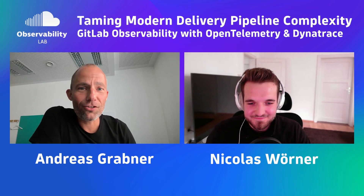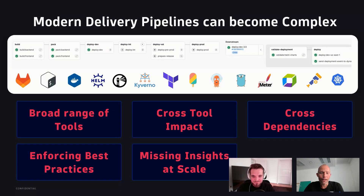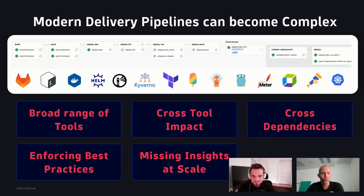I want to jump right into the topic - modern delivery pipelines and their complexity. When I talk with the community, they say in the beginning everything starts very easy with small pipelines, but eventually as they're rolling things out they're including more and more tools. Cross-tool impact and cross-dependencies come in. In your line of work, do you see the same challenges?